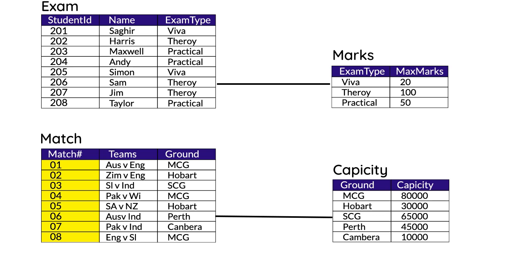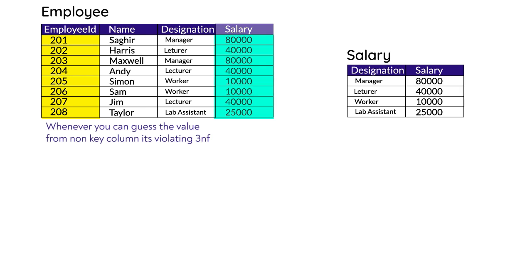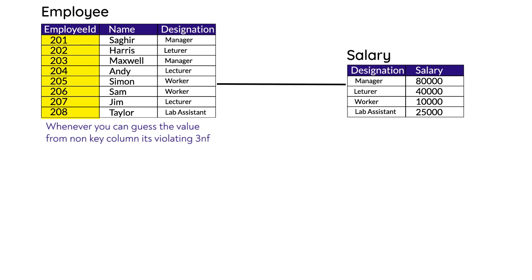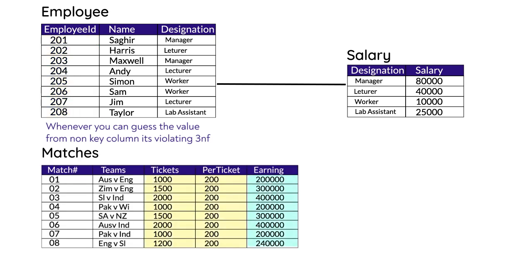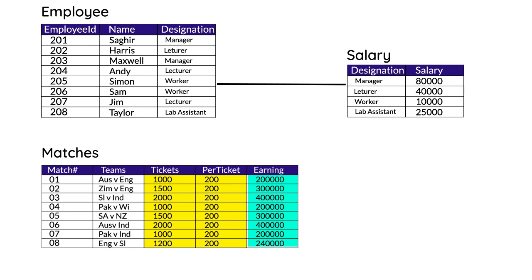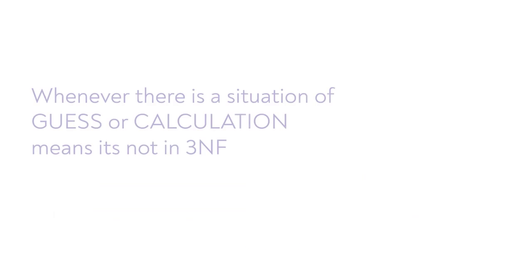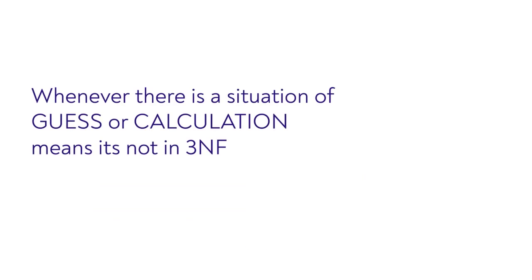Another example: if someone's designation is manager, their salary will be 80,000. In the database table, if there is any transitive dependency between non-key columns, we break the part that is transitively depending on the other. Transitive dependency also occurs when there is a calculation performed in the table — for example, the amount of earnings depends on total ticket sales multiplied by the price of the ticket. If 1,000 tickets are sold at 200 each, the earning is 200,000. If any calculation can be performed using columns in a table, that is also considered a violation of Third Normal Form.